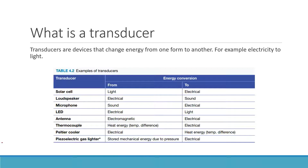A transducer is a device that changes energy from one form to another. For example, electricity to light — that would be something like an LED. Other examples include: electrical energy to sound, electromagnetic energy to electricity, heat energy to electrical energy, and mechanical energy to electrical energy. Most of these involve electricity.